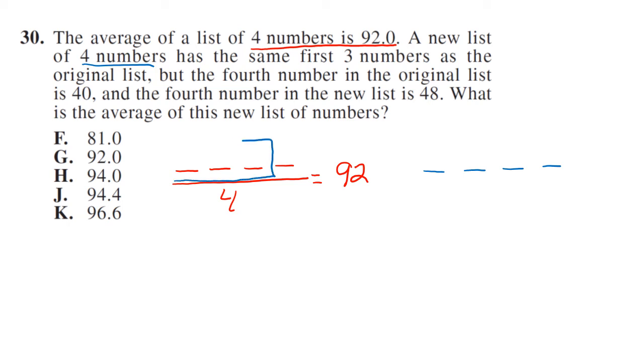Has the same first three numbers as the original list. So these three numbers will be the same in both. But the fourth number in the original list is 40, so we know this number is 40. And the fourth number in the new list is 48, so this is 48. Remember, these three numbers are the same. What is the average of the new list of numbers? We know this divided by four. We want to know what is the average going to be.